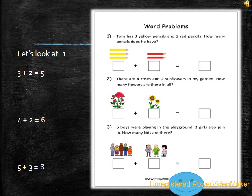Third question: Five boys were playing in the ground. Three girls also joined in. That means five boys were playing in the ground and then three girls came and joined them. How many kids are there in total? We have to tell how many total kids are there. So five plus three equals eight. This is how we will solve it in our books also, but we will write the sum in vertical manner.